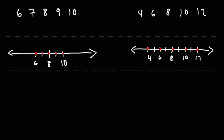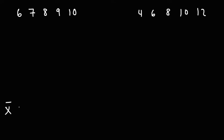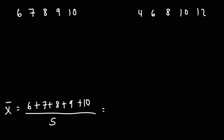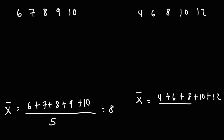In both cases, the sample mean is the same. To calculate the sample mean of the first one, we take the sum of all the numbers and divide it by 5, since we have 5 numbers in the set. The sum is 40, divided by 5, we get 8. Now for the second one, it should be the same — the data is centered at 8. So if you add 4 plus 6 plus 8 plus 10 plus 12 and divide it by 5, this would be 40 over 5, which is 8 as well. So in both cases, 8 is the sample mean.